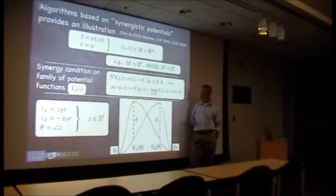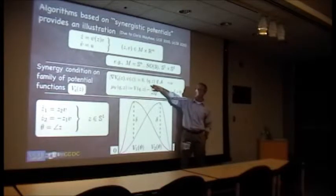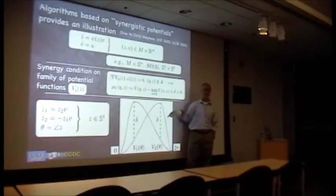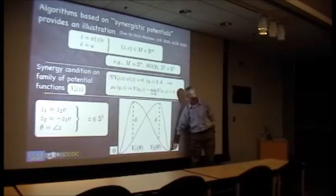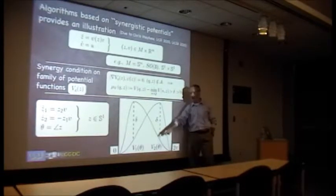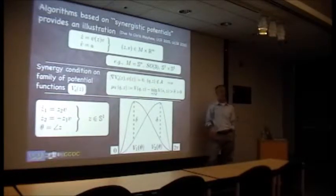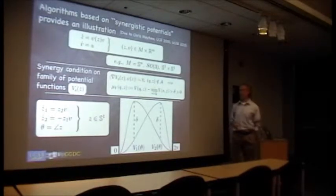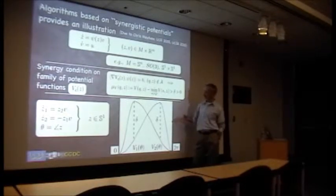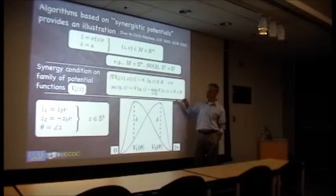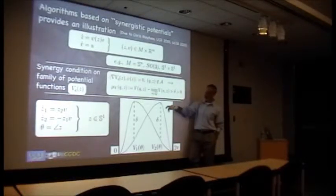What that enables you to do is say that when you get close to being stuck at a point where you wouldn't be decreasing the potential, you could actually switch to the other potential and follow that potential to where you're wanting to go, which is the zero point. This naturally creates a hysteresis mechanism.